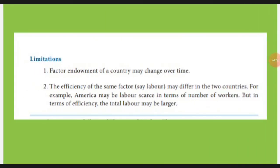Limitations of Heckscher-Ohlin theory: first, the factor endowment of a country may change over time — capital abundance can change according to the situation or demand; it won't remain constant. Second, the efficiency of labor between two countries may differ — America may have less labor but that labor may be more efficient. So we cannot simply compare countries based on quantity of labor alone.